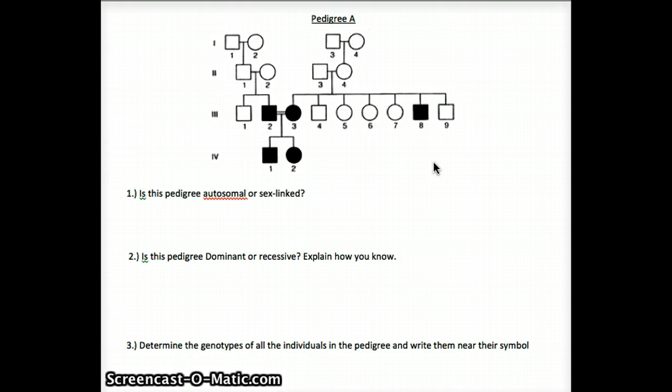Now, to determine the genotypes of all the individuals, since I know it's a recessive trait, I'm going to first write the ones that I absolutely know right off the bat. The easiest ones for me to determine here are going to be the ones that have the trait. So that's going to be number eight, little a little a. Number two in generation three, little a little a. Number three in generation three, and numbers one and two. Because we know this is a recessive trait, and in order to have a recessive trait, you need to have two recessive alleles.